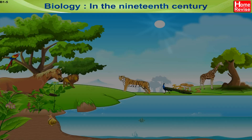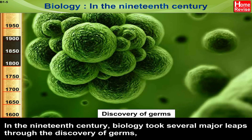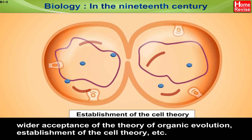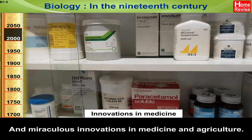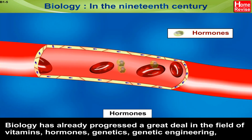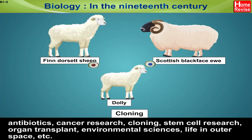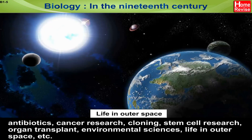Biology in the 19th century. In the 19th century, biology took several major leaps through the discovery of germs, wider acceptance of the theory of organic evolution, establishment of the cell theory, etc. Now, the 21st century is poised to unravel more mysteries of nature and miraculous innovations in medicine and agriculture. Biology has already progressed a great deal in the fields of vitamins, hormones, genetics, genetic engineering, antibiotics, cancer research, cloning, stem cell research, organ transplant, environmental sciences, life in outer space, etc.